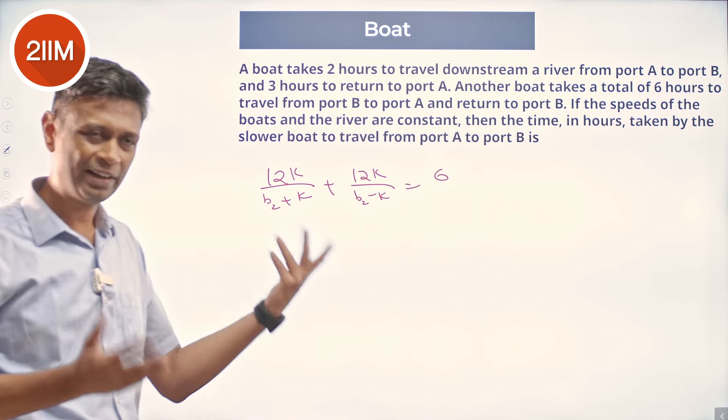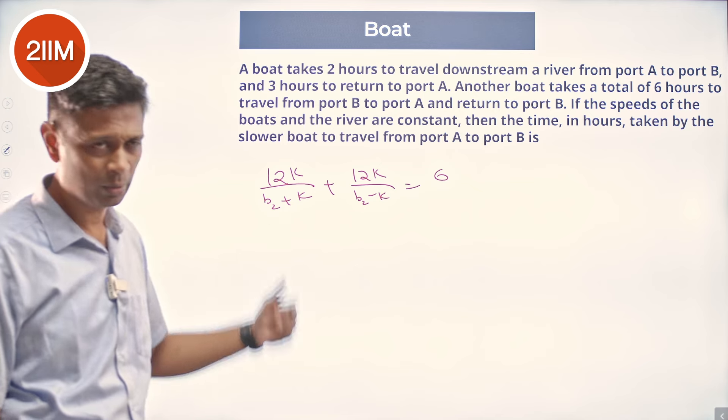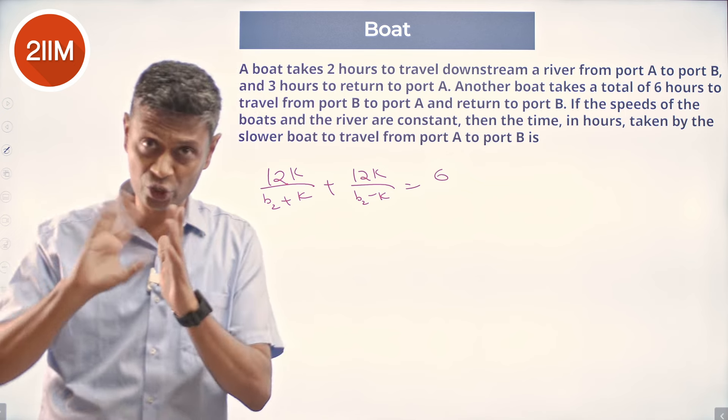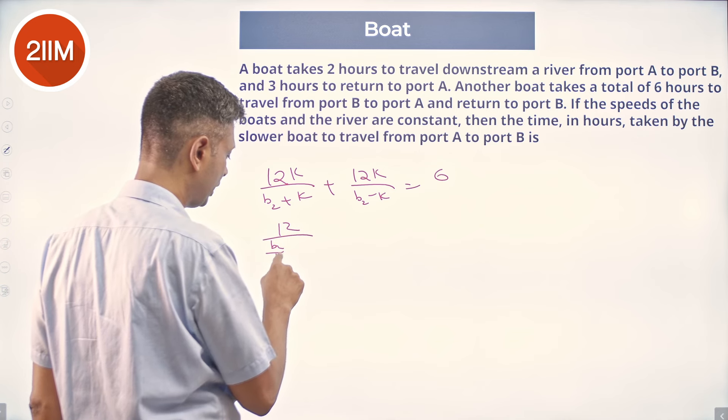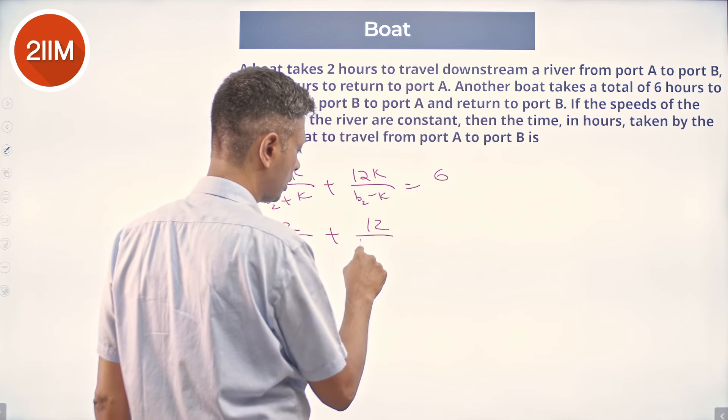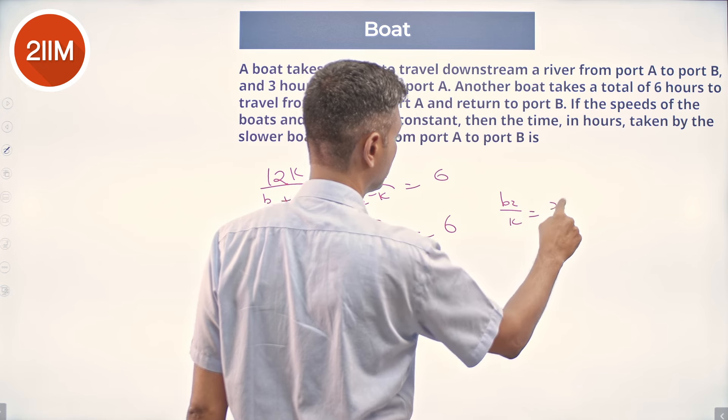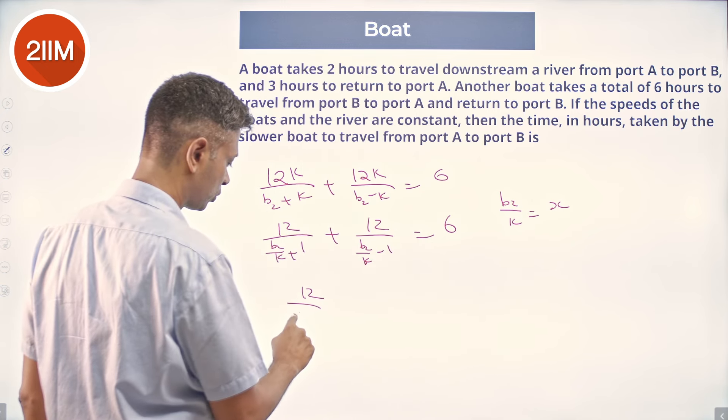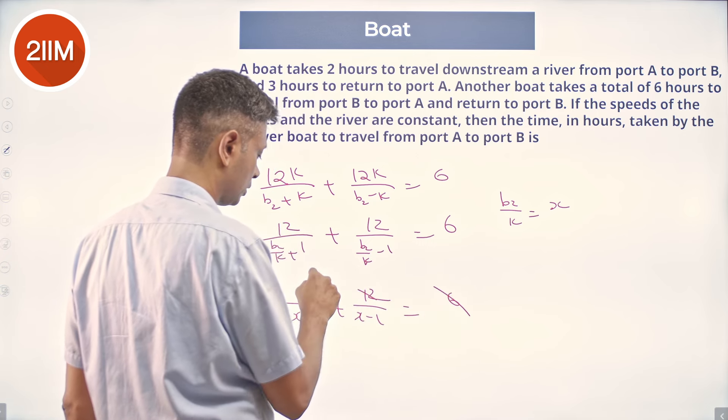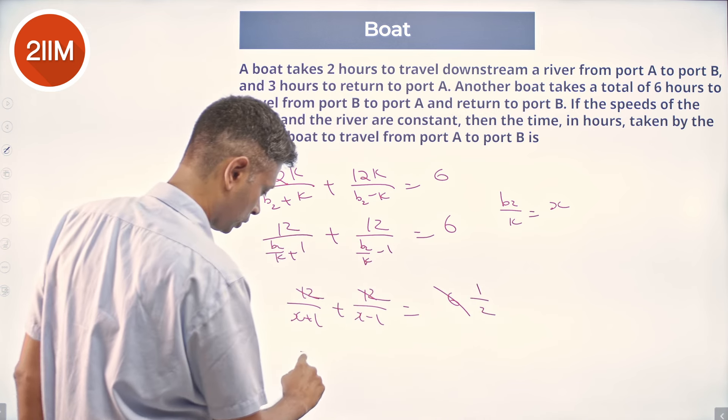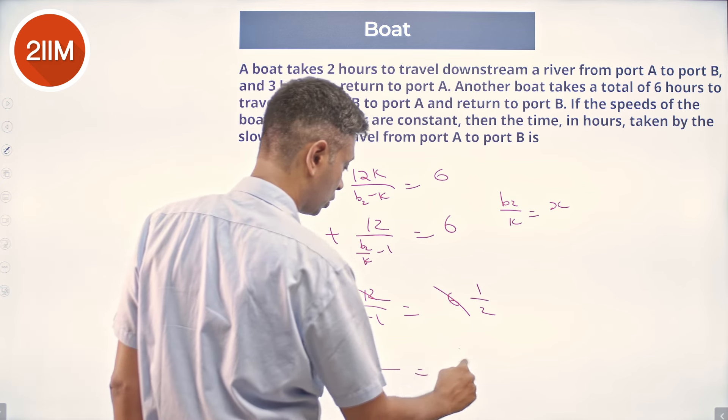Let us fill this in 12K by B2 plus K plus 12K by B2 minus K is equal to 6 and then find B2 in terms of K and then simplify and solve. So, there are two variables, but it is actually technically speaking only one ratio. So, this is K divide by K throughout 12 by B2 by K plus 1 plus 12 by B2 by K minus 1 is equal to 6. This is 2, I am going to call it 1 by 2.